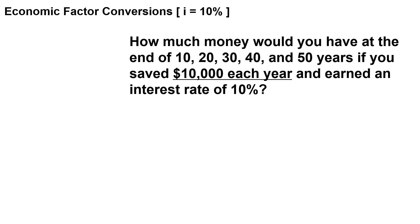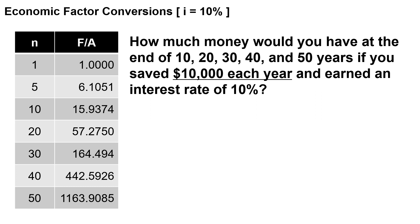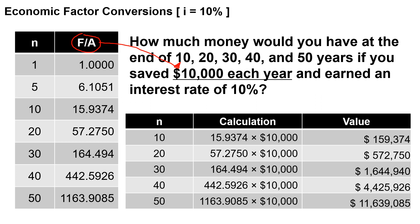Another question: what if you put in $10,000 every year, paying yourself first? Now we're looking for a different factor conversion — future given annual. Our annual amount is $10,000 each year over 10, 20, 30, 40, and 50 years. At year 10, you've put in $100,000 principal, and that grows to $159,000 — some progress, but not tremendous. At 20 years, you've put in $200,000, and at the end of those 20 years it's worth over half a million.